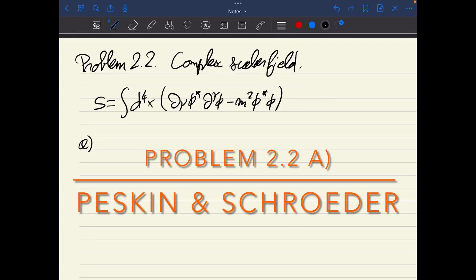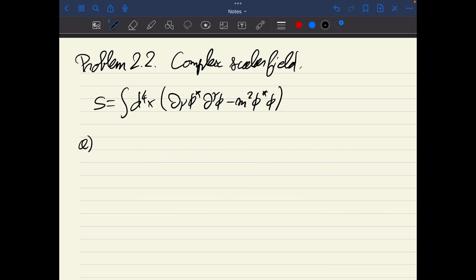In problem 2.2, we study the complex scalar field. This is the action for this theory. We have two independent degrees of freedom, which we can take as either the real and imaginary part of the field, or directly the field itself and its conjugate.